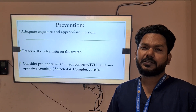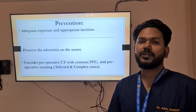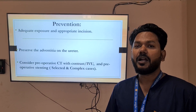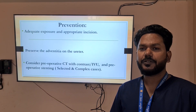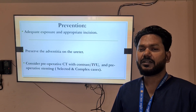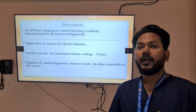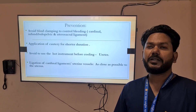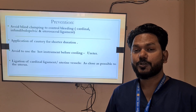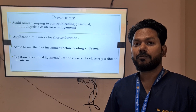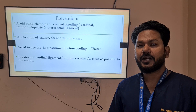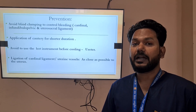Our goal should be prevention, as prevention is better than cure. There must be adequate exposure and an appropriate incision for pelvic surgery. We should preserve the adventitia on the ureter while handling it. We should consider preoperative CT with contrast and stenting at least in selected and complex cases. We should avoid blind clamping to control bleeding, especially at the cardinal, infundibulopelvic, and uterosacral ligaments. Application of cautery should be for a shorter duration, avoiding hot instruments near the ureteric area, and ligation of the cardinal ligament and uterine vessels should be very close to the uterus.